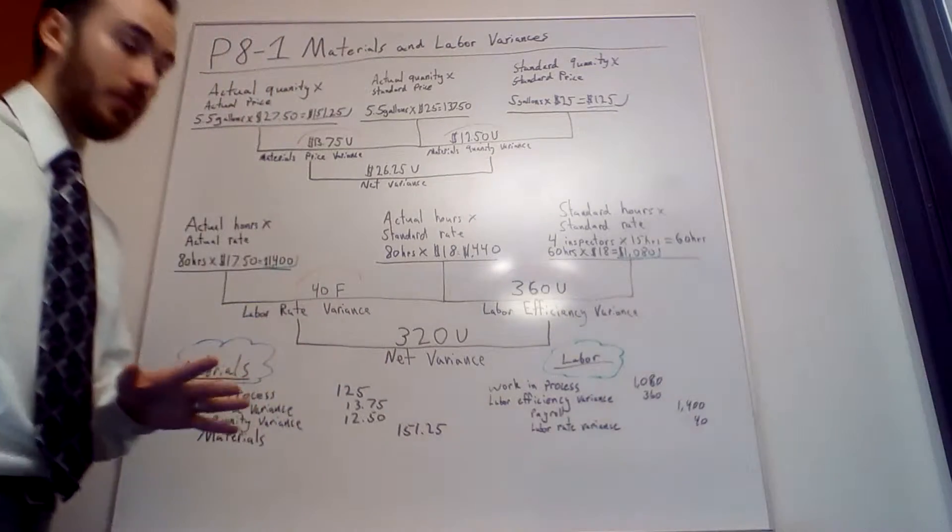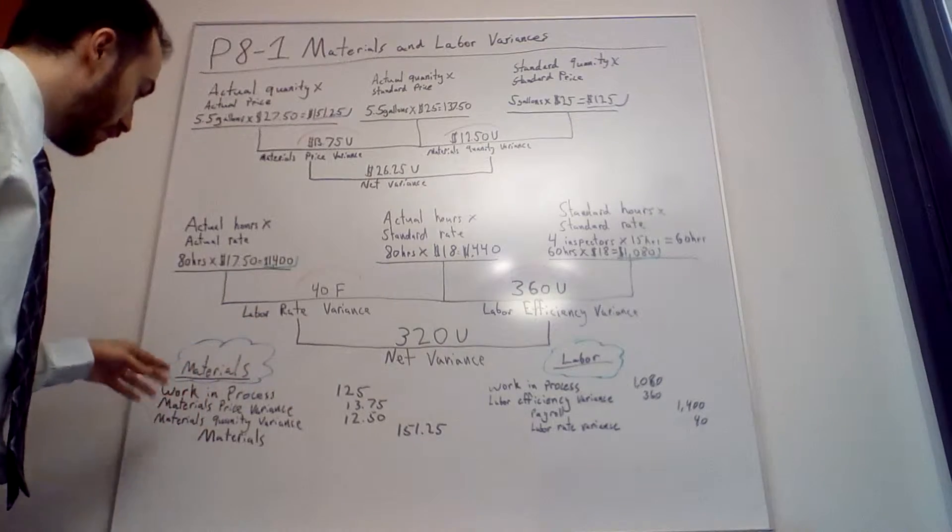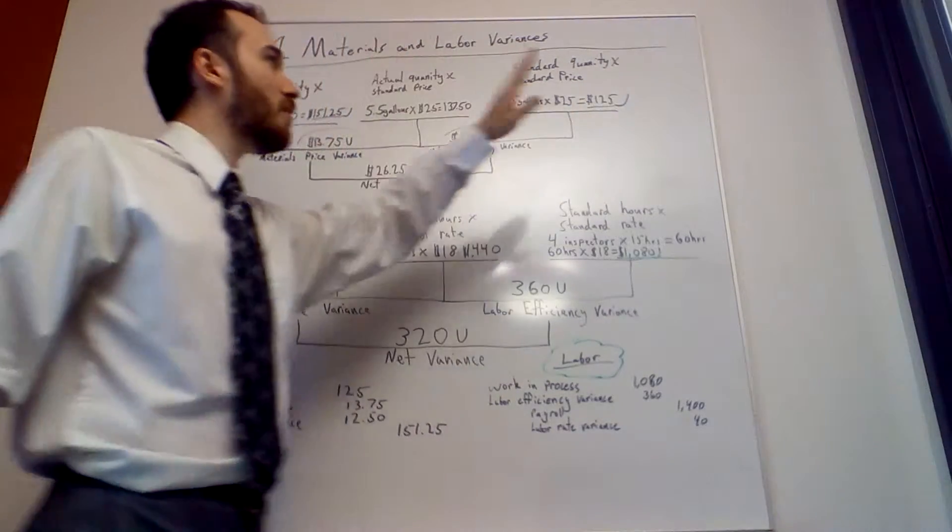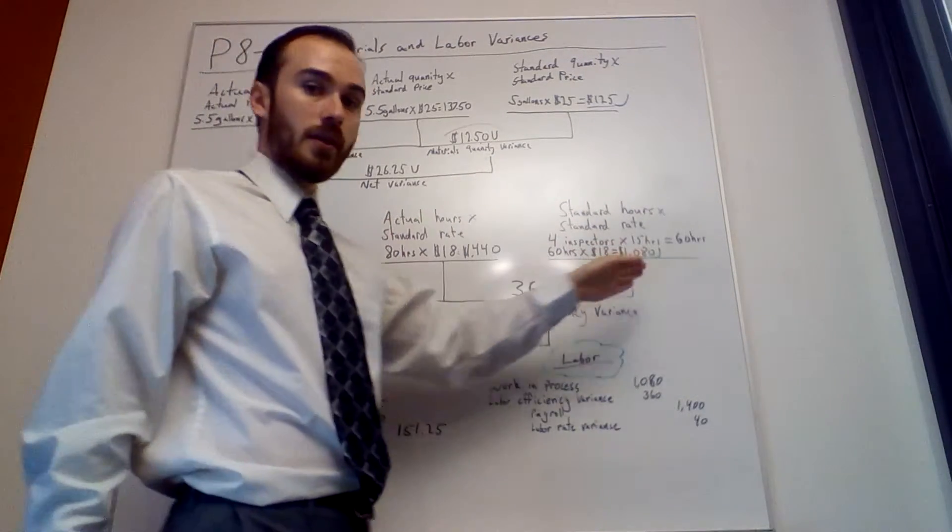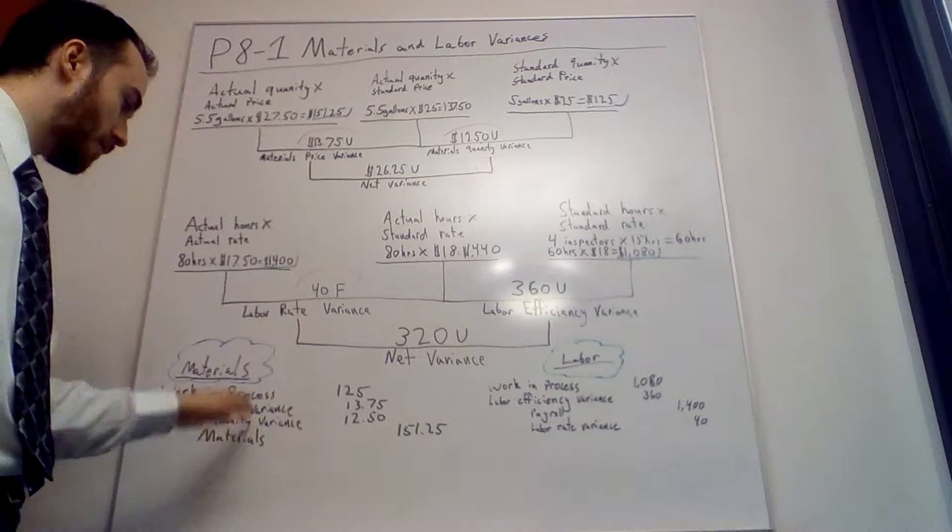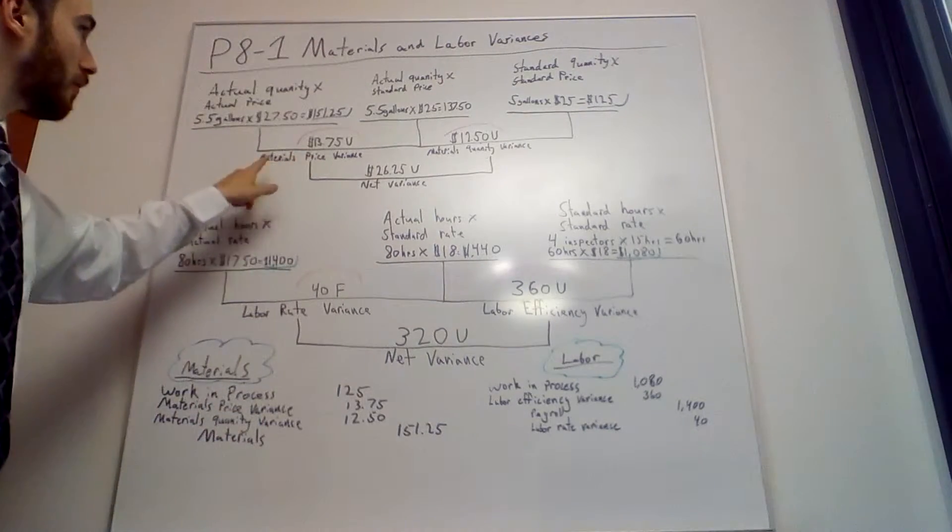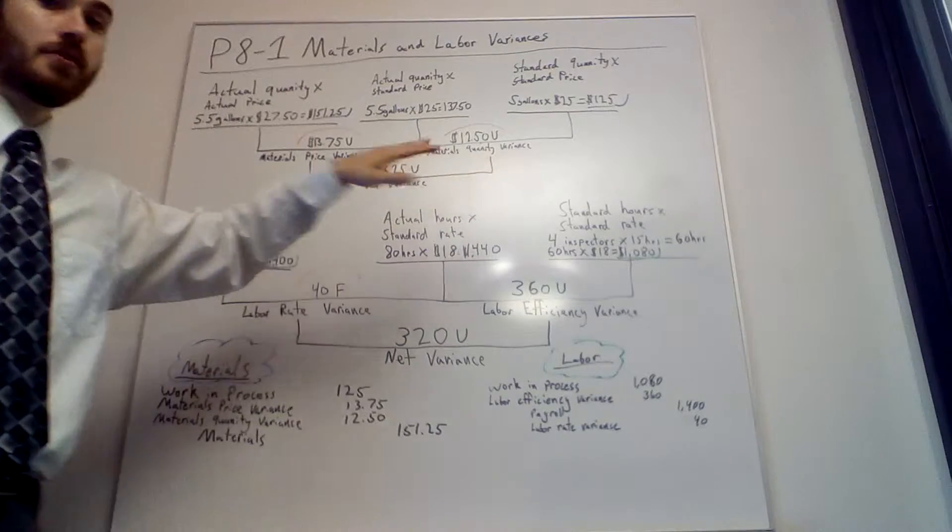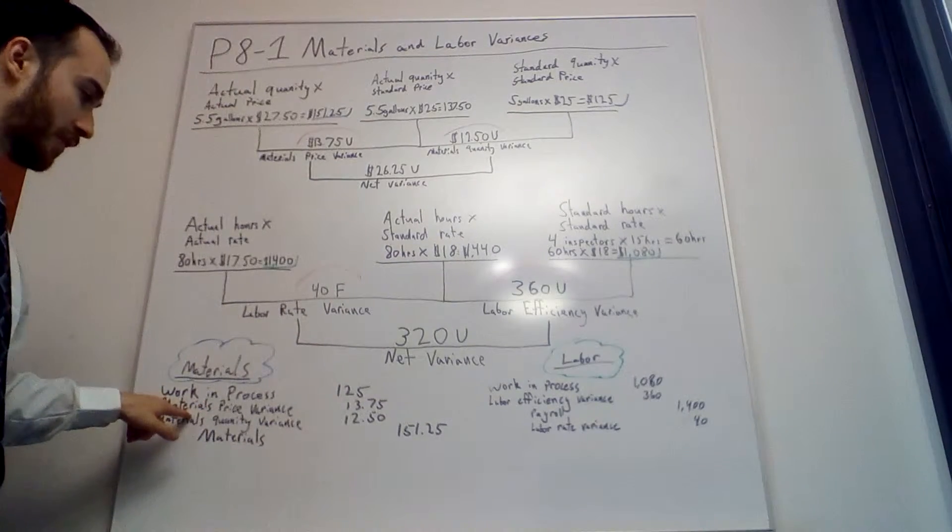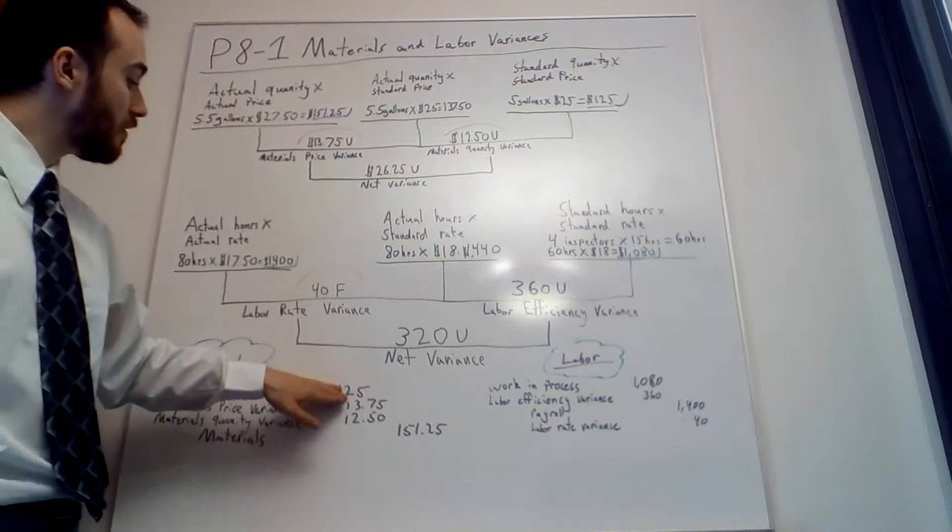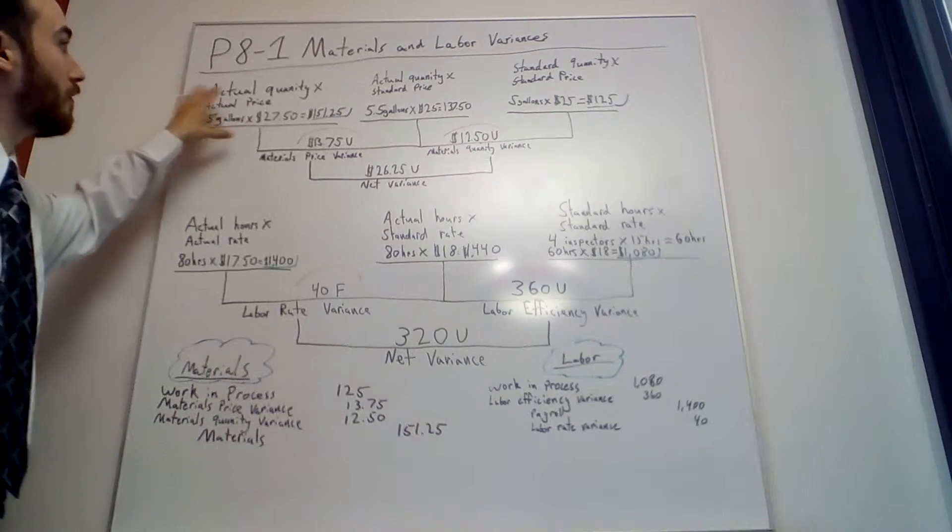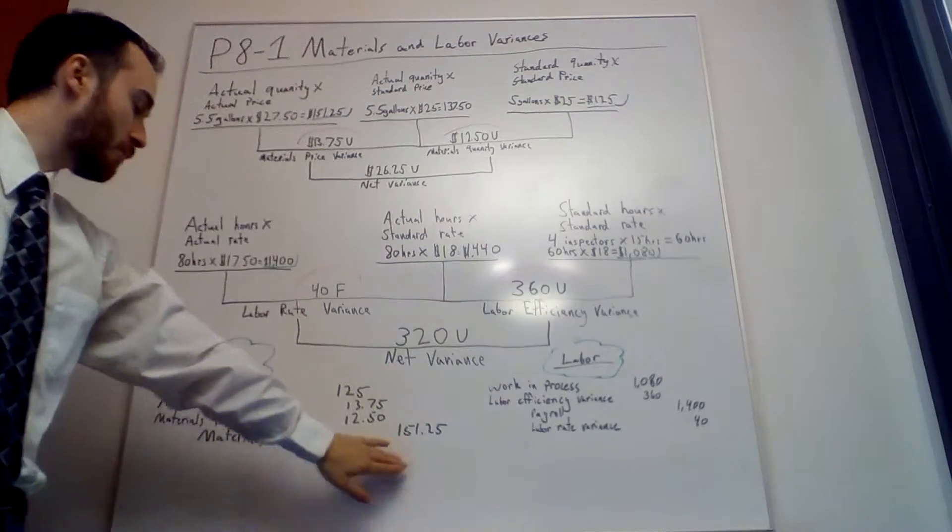Here is the journal entry you'd want to make after doing the chart. For materials, the far right is always the work in process, so work in process debits for $125. You always debit it because you're moving from materials to work in process. If it's unfavorable for materials price or quantity variance, it's a debit. Unfavorables are debits, favorables are credits. We debit materials price variance $13.75 and materials quantity variance $12.50. Then we credit materials for the far left, $151.25.